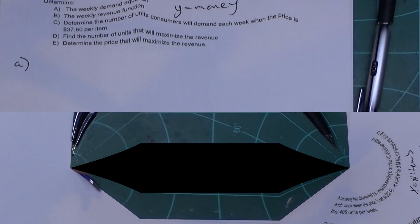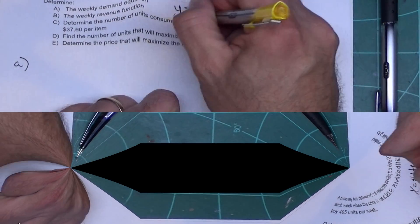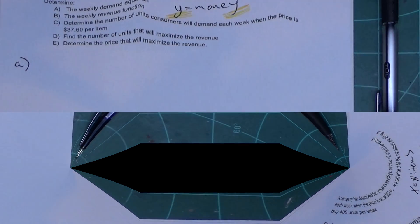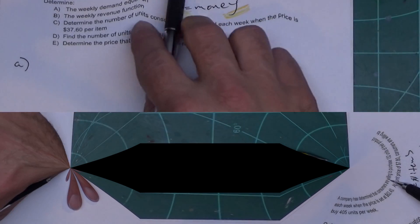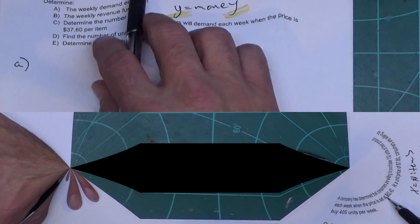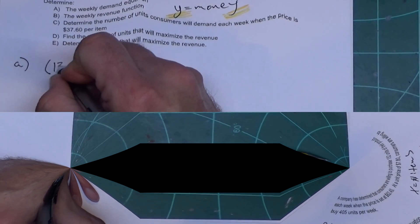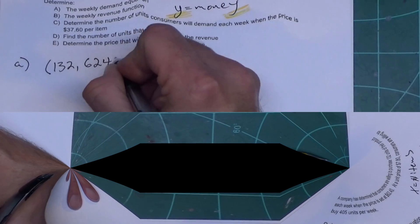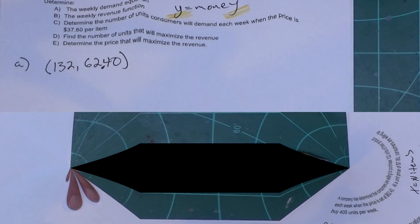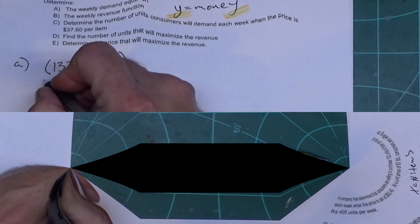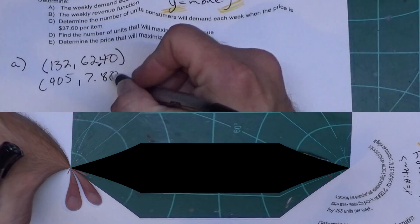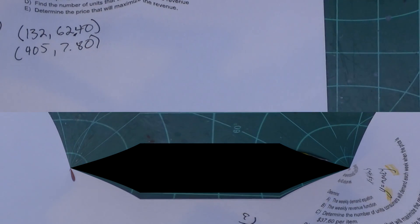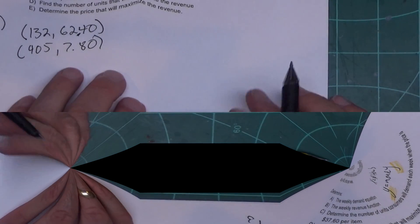Always remember X is number of items, Y is money. You can remember Y is money because if you look at the end of money, what do we have? A Y is at the end of money. So reading it again, it says they're willing to purchase 132 items at a price of $62.40, so I got (132, 62.40). And then it says at a price of $7.80 they'll purchase 405, so (405, 7.80).